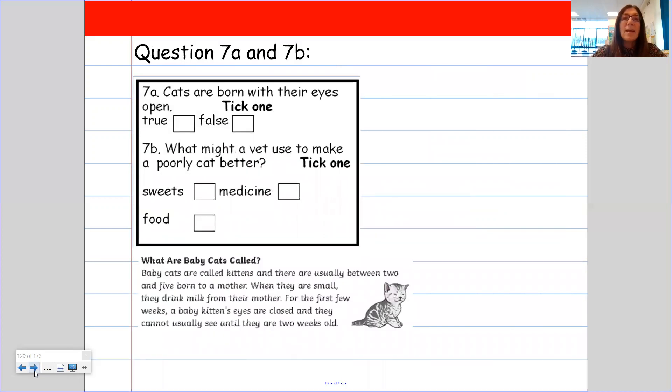Now, question 7a and 7b is slightly different. And these are you've got to tick an answer or you can write the answer in your home learning book. So cats are born with their eyes open. Is it true or is it false? And it says here for the first few weeks, a baby kitten's eyes are closed. So that would be false.